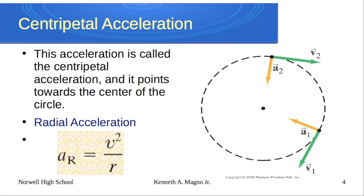As we go around that circle, we know that if velocity is changing — whether it's speed or direction — there has to be acceleration, because a force will cause acceleration. Going through the math, we find that the radial acceleration equals v squared over r. So radial acceleration, or centripetal acceleration, is v²/r.